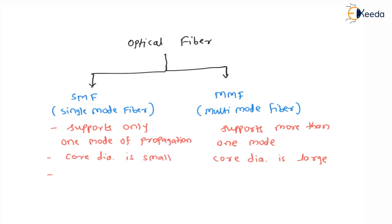Optical fibers are basically divided into two types. The first one is single mode fiber, in short called SMF, and the second one is multi-mode fiber, that is MMF. In single mode fiber, it only supports one mode of propagation.